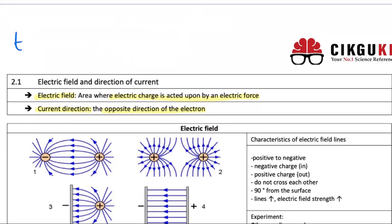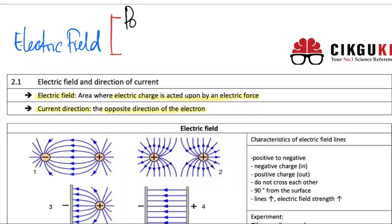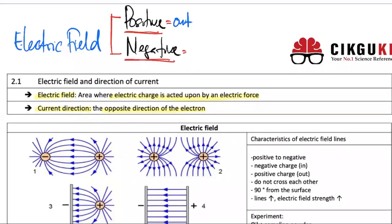The next part of this topic is the electric field. When we talk about the electric field, you need to remember two charges: the positive charge and the negative charge. If it's positive, the field lines will move out. If it's negative, the field lines will move in. Remember: positive moves out, negative moves in.